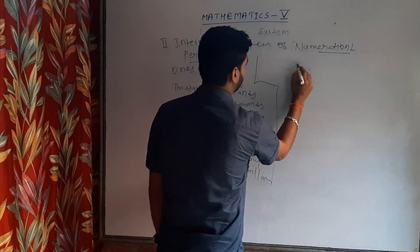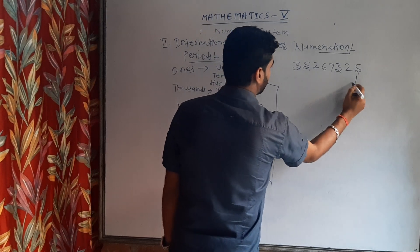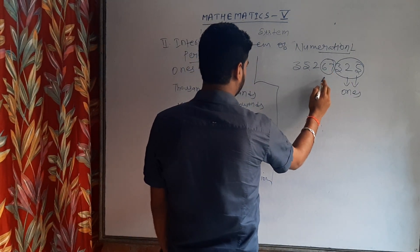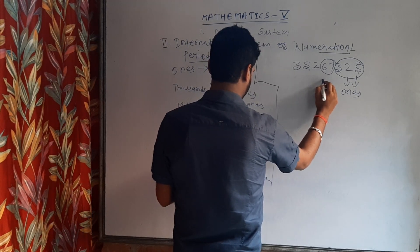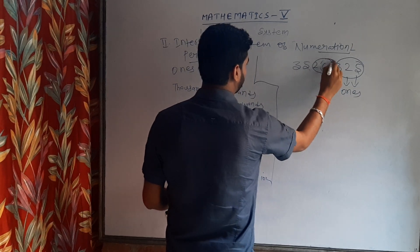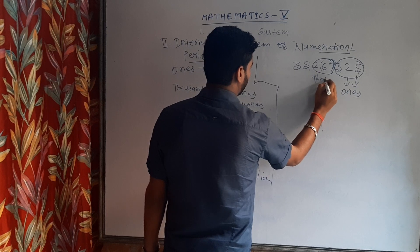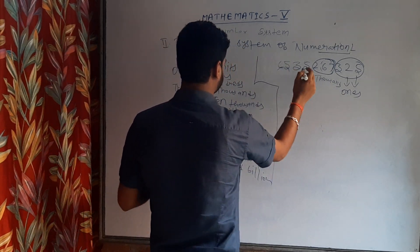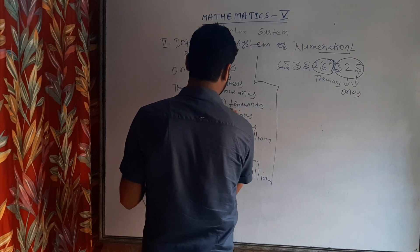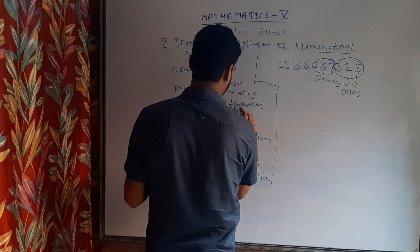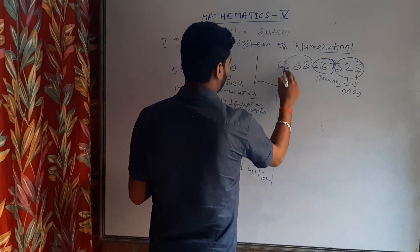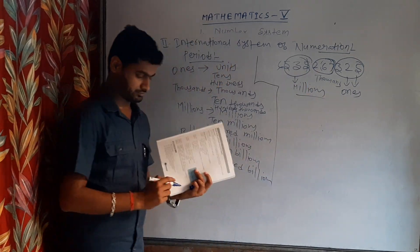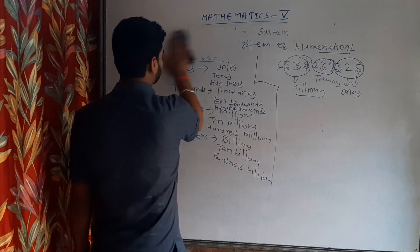In the international system, if we have the number 3,526,325 — five, two, and three come in the ones period; seven and six come in the thousands period; six is hundreds and two is counting in thousands; five and three come in the millions period.